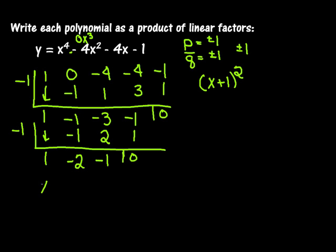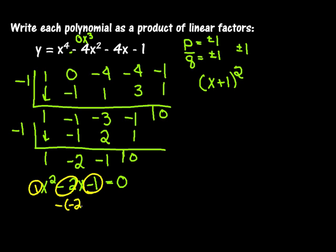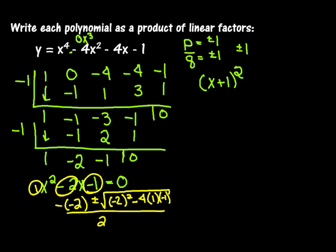So what I have here is x squared minus two x minus one, and I'm going to make that equal to zero. Unfortunately, this does not factor very nicely, so we're going to have to use the quadratic formula. One is my a, negative two is my b, and negative one is my c.